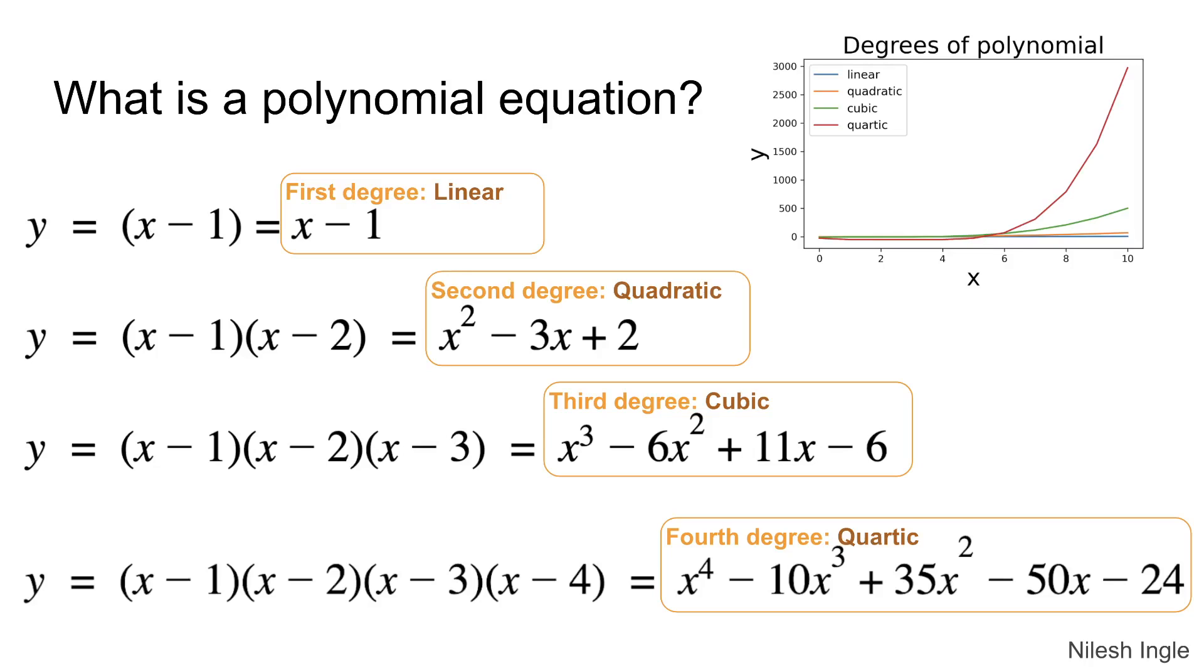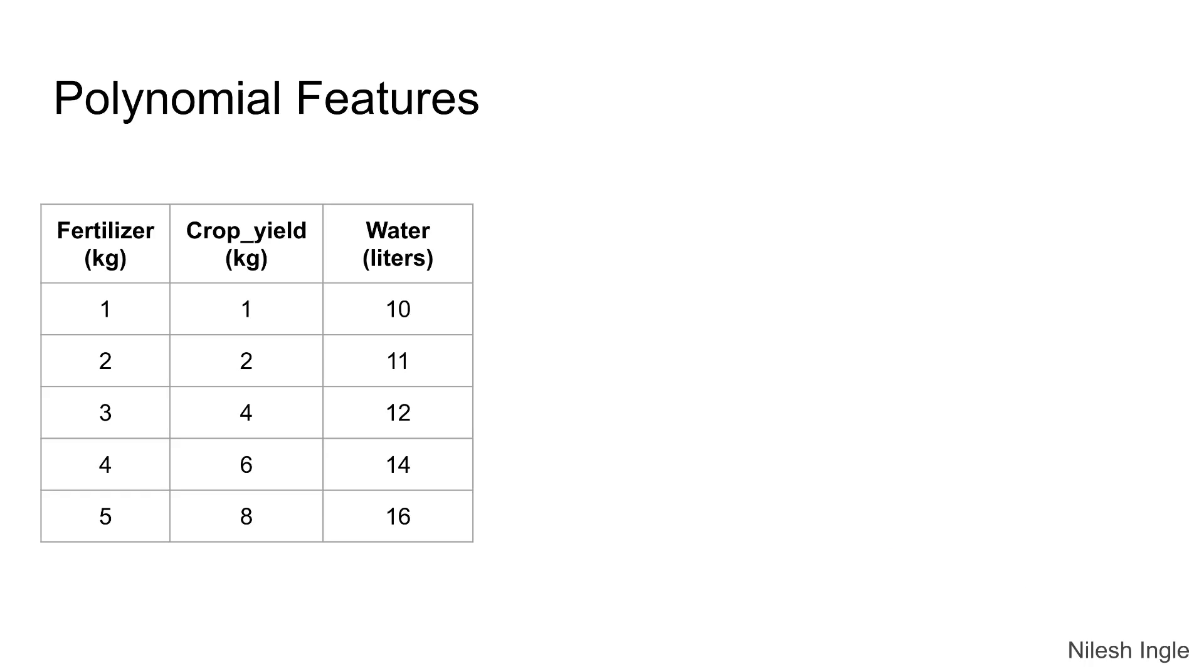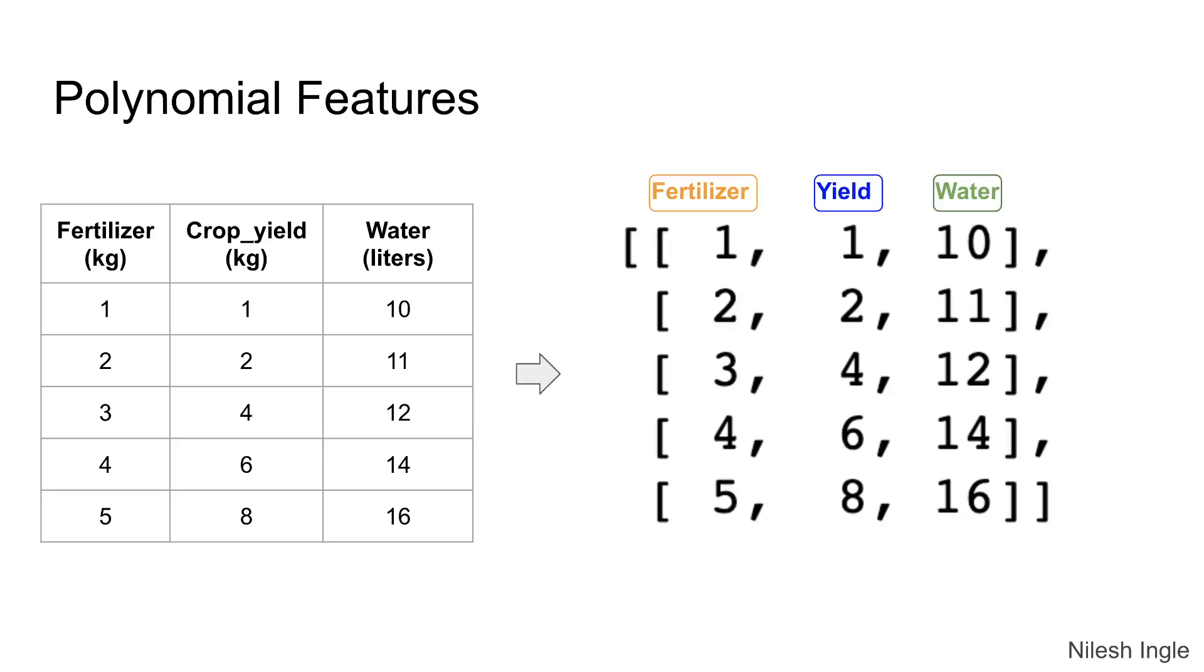We can use these degrees in using the scikit-learn library to create multiple polynomial features based on the degree that we use. For example, let's consider this dataset here where there are three columns: fertilizer, crop yield, and water.